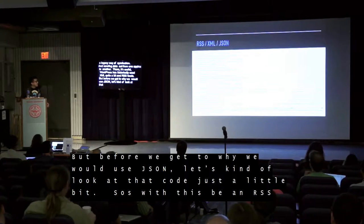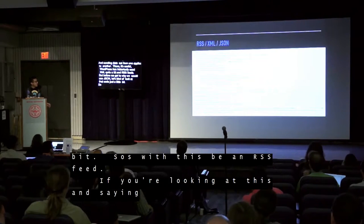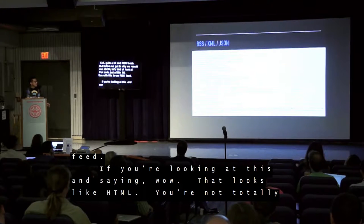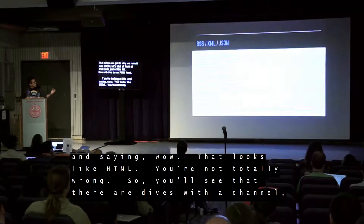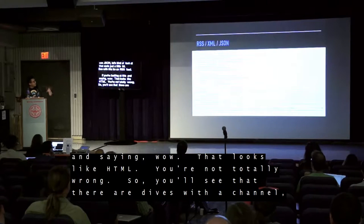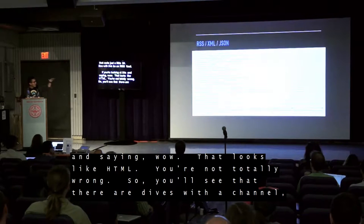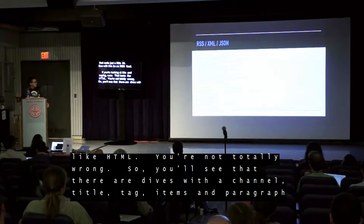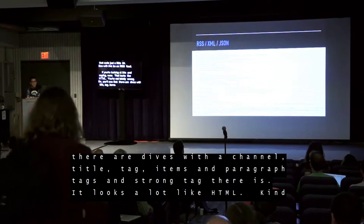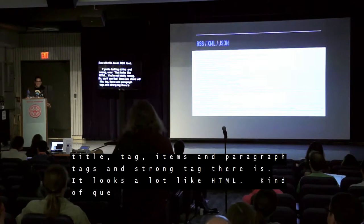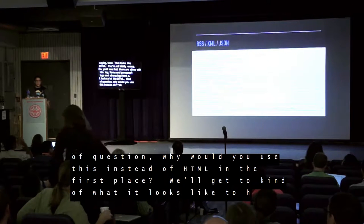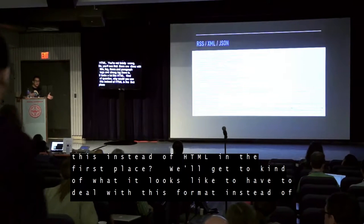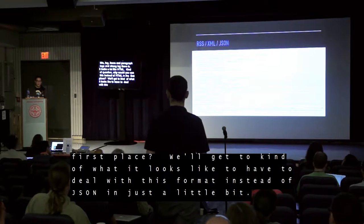So this is an RSS feed. If you're looking at this and saying that looks like HTML, you're not totally wrong. You'll see there are elements where it starts off with channel, then comes down to a title tag, items, and paragraph tags and strong tags. Looks a lot like HTML. Kind of begs the question: why would you use this instead of HTML in the first place? And we'll get to what it looks like to deal with this format instead of JSON in just a little bit.